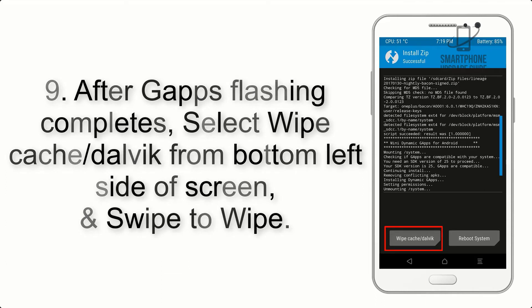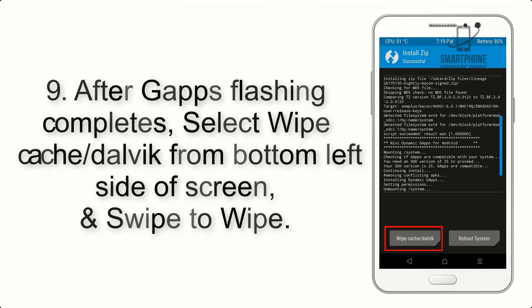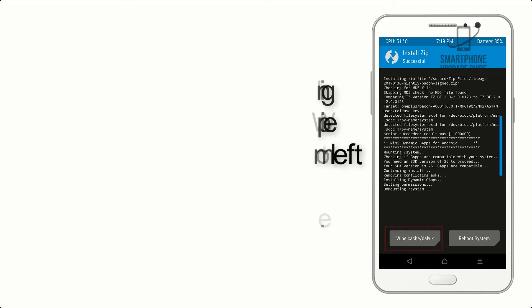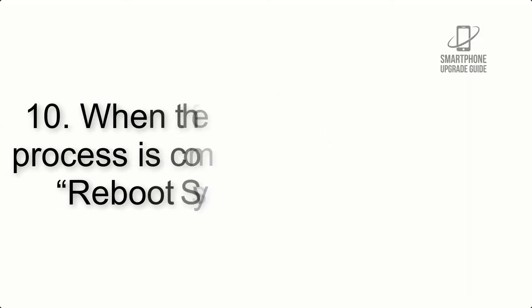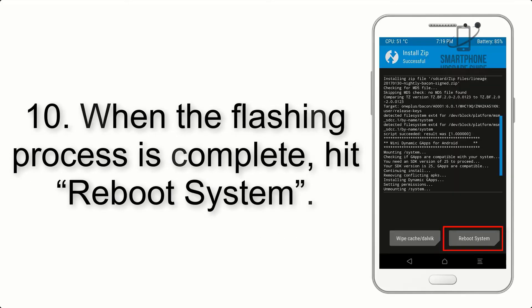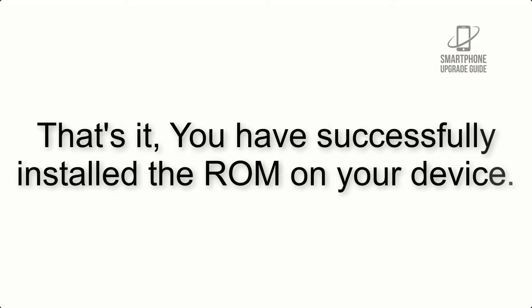Step 9: After GApps flashing completes, select Wipe Cache and Dalvik from the bottom left side of the screen and swipe to wipe. Step 10: When the flashing process is complete, hit Reboot System. That's it — you have successfully installed the ROM on your device.